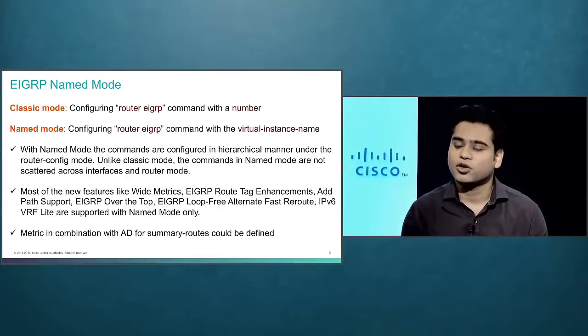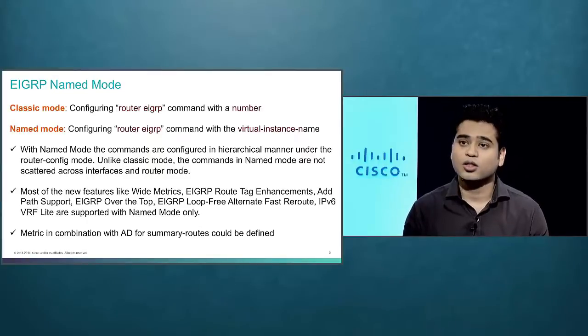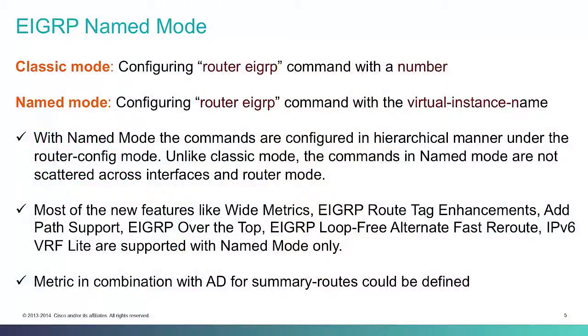For example, with EIGRP authentication in the legacy mode, the authentication command needs to be configured at the interface level for every interface that participates in EIGRP. But in name mode, you configure one single command under the address family mode, and all interfaces that are part of that address family start running EIGRP with authentication enabled. Similarly, timers and BFD configuration have been moved from interface level to router level. There is also a new feature — EIGRP metric for summary routes — where instead of recalculating the metric based on the best component route, you can now specify a static metric value for the summary route, avoiding reconvergence.